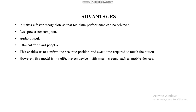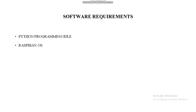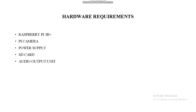Software requirements include Python programming IDE and Raspbian OS. Hardware requirements include Raspberry Pi 3B Plus. In this proposed system we are using the 3B Plus model, but we can improve system performance by using a Raspberry Pi 4B for a much faster processor. Other hardware includes a Pi camera, power supply, SD card, and audio output unit.